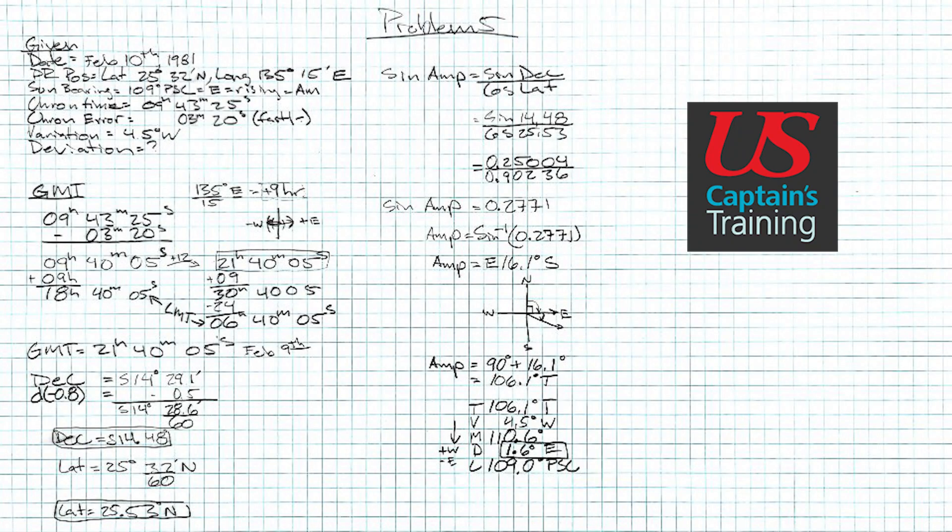Hey, Neil Smith here with U.S. Captains Training. We are looking at the solution to amplitude practice problem 5. This is a phenomenal example of the intricacies involved in finding GMT. If you check out the math, you'll notice that first, there's ambiguity in the chronometer.